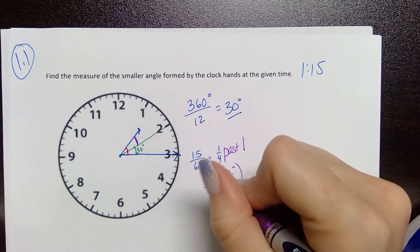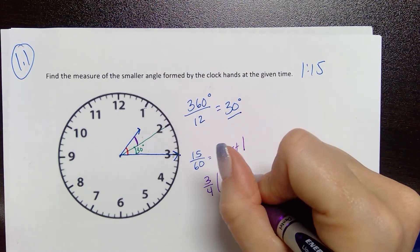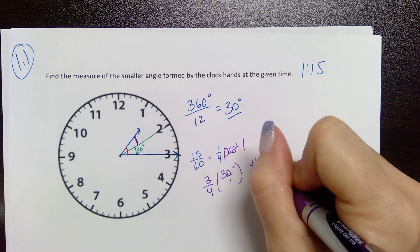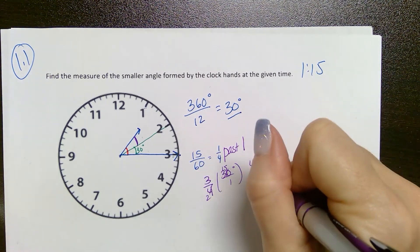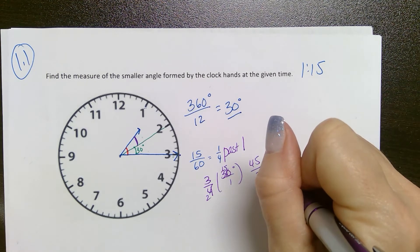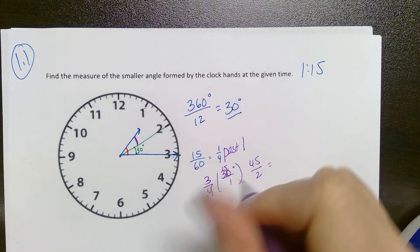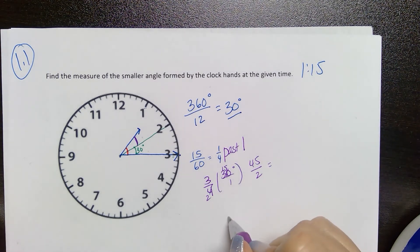Which puts me at, let's see, I'm sorry, 45, if I reduce by 2, I have 45 halves, which is 45 divided by 2 is going to be 22 and a half degrees.